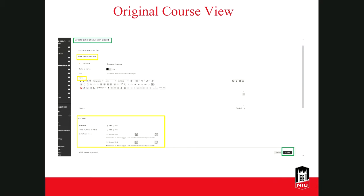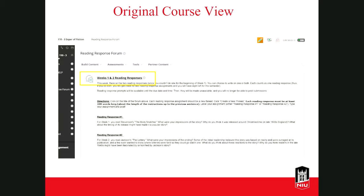Once you've entered the information you want, click Submit to create the tool link. After you submit, you will see your discussion board link in the content area or folder. In this example, I added the discussion instructions in the link text that also appear in the forum description so that students can see them before they start. If you want instructions to appear in both places, make sure to copy your instructions when creating the forum so you can also paste them into the text box for the discussion link.